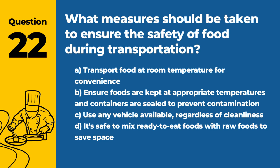Question 22. What measures should be taken to ensure the safety of food during transportation? The answer is B: Ensure foods are kept at appropriate temperatures and containers are sealed to prevent contamination. Proper temperature control and prevention of cross-contamination are crucial during food transport.